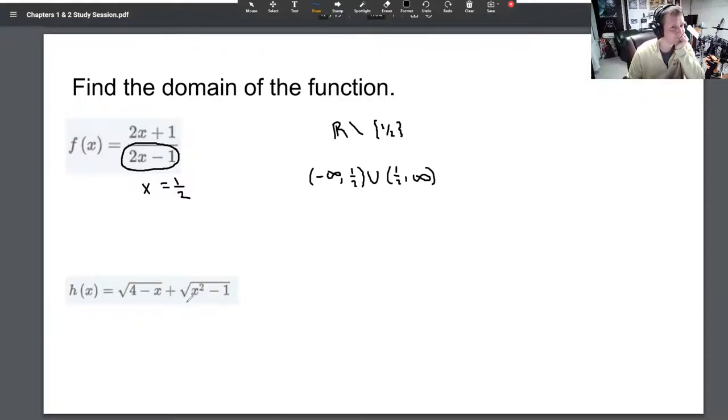For the second one, what could cause issues? We start with all real numbers and suppose we can plug in anything. Then we start looking for problems. We know that there are problems when we take square roots of negatives. So we need to consider this: we need 4 - x to be positive or zero, and we need x² - 1 to be positive or zero. Both of these things must be true. Because if one of them is negative, we can't evaluate the function. We're going to solve both of these, then take intersections of the created sets.